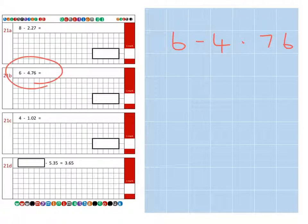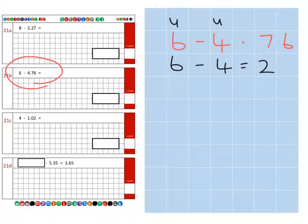And to begin with, if we subtract the two units, so that's 6 subtract 4 which gives us 2. Then we can take the decimal part away from those remaining units. So that's 2 units subtract 0.76.